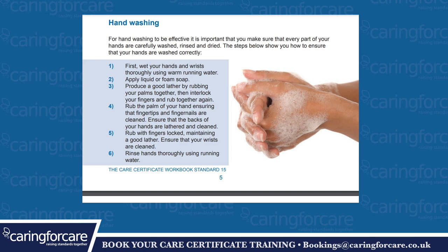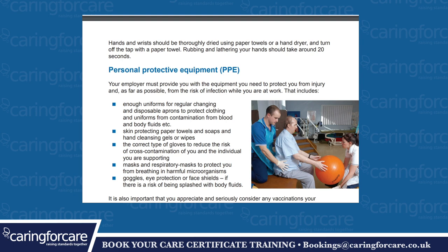For hand washing to be effective, every part of your hands must be carefully washed, rinsed and dried. First, wet your hands and wrists thoroughly using warm running water, then apply liquid or foam soap. Produce a good lather by rubbing your palms together, then interlock your fingers and rub together again. Rub the palm ensuring fingertips and fingernails are cleaned. Ensure the backs of your hands are lathered and cleaned. Rub your fingers locked maintaining a good lather ensuring your wrists are cleaned. Rinse thoroughly, then dry hands and wrists using paper towels or a hand dryer, and turn off the tap with a paper towel. Rubbing and lathering your hands should take around 20 seconds.